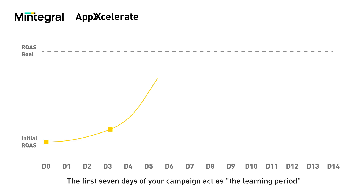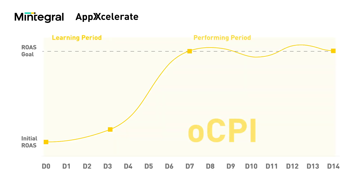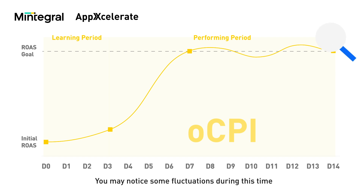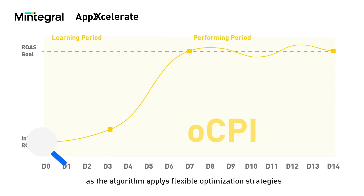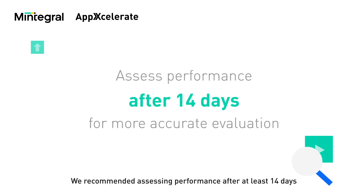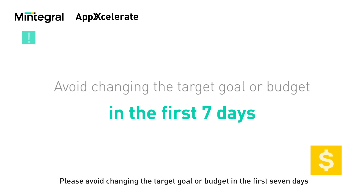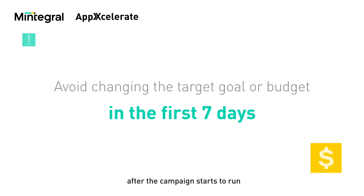The first seven days of your campaign act as the learning period where our algorithm gathers sufficient data. You may notice some fluctuations during this time, as the algorithm applies flexible optimization strategies to balance the targets and spending scale. We recommend assessing performance after at least 14 days for more accurate evaluation. Please avoid changing the target goal or budget in the first seven days after the campaign starts to run.